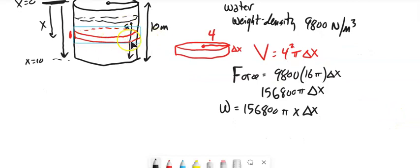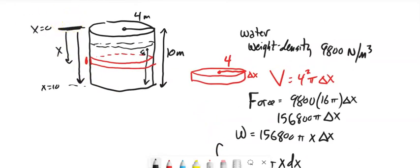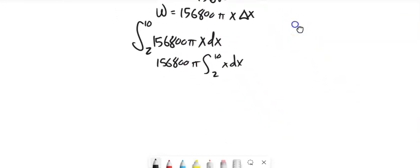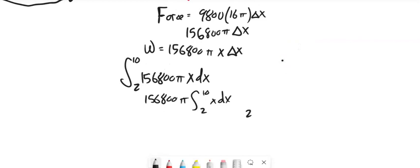We have many disks to move out, so we set up an integral. Be careful: x is 0 at the top, and when the water height is 8, the x value is actually at 2. So this runs from 2 to 10 - those are the distances we pull disks out. Pull out the constant and you can get there from there.